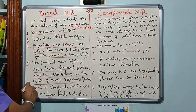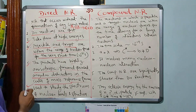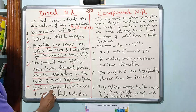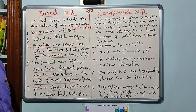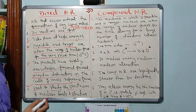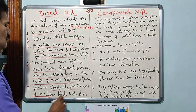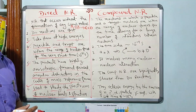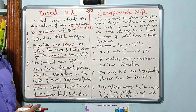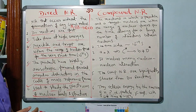The last point is that direct nuclear reactions are used to study the spectrum of nuclear levels and to study the nuclear structure as well. So these are the important points you can observe in the direct nuclear reaction.